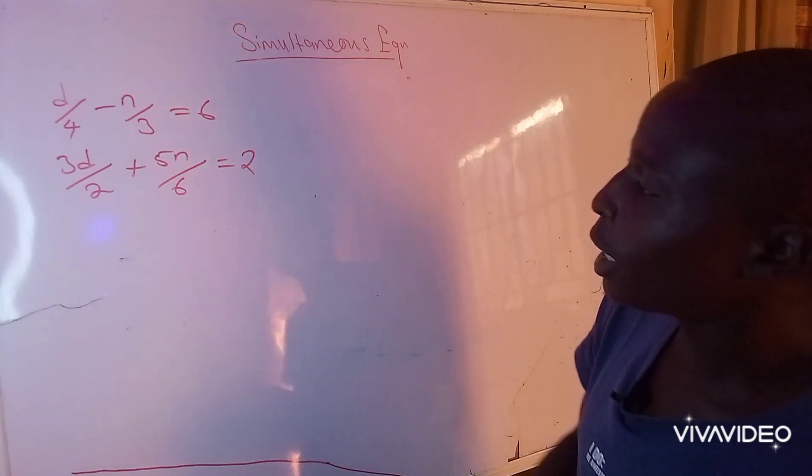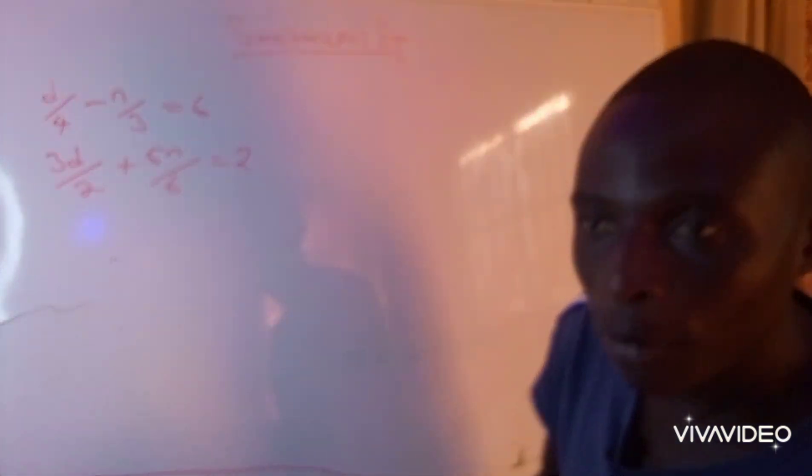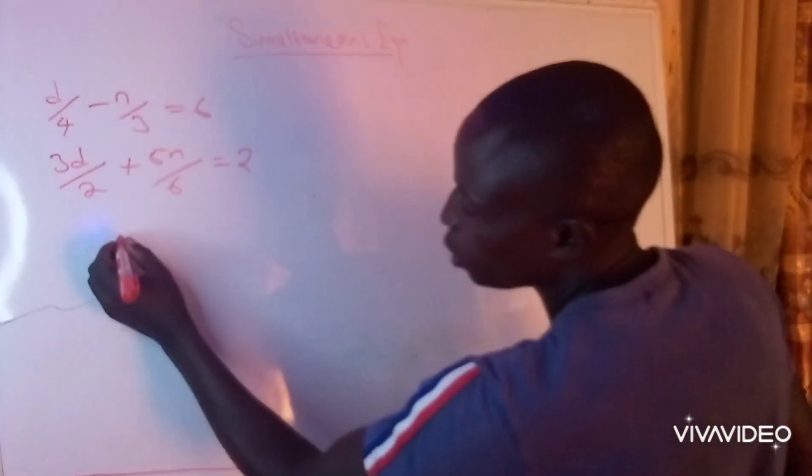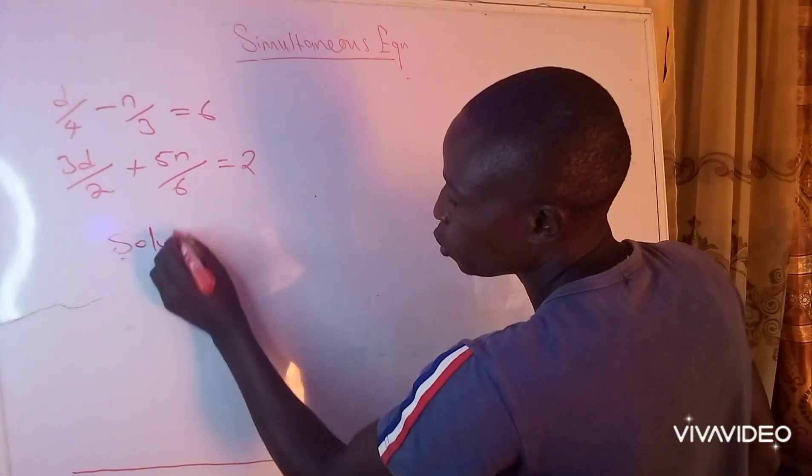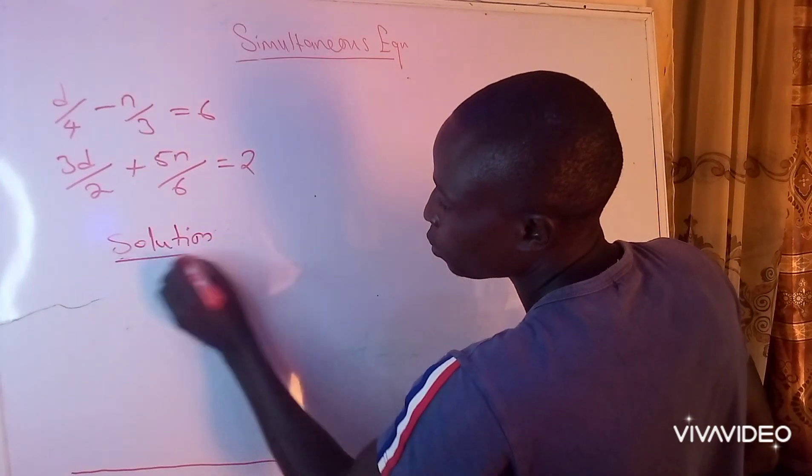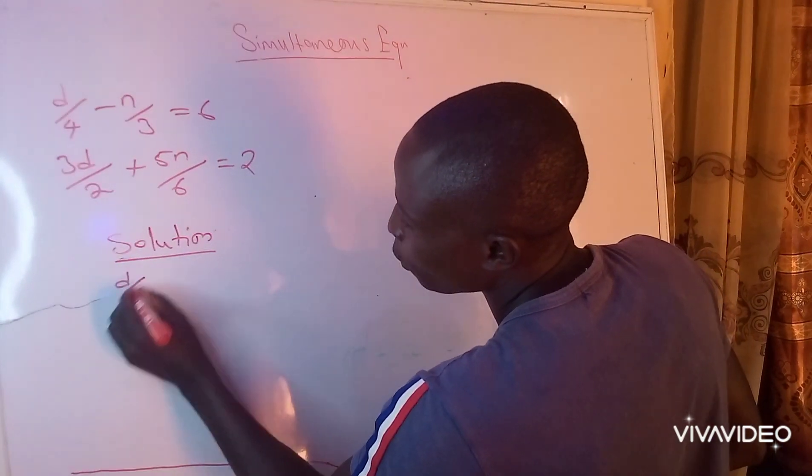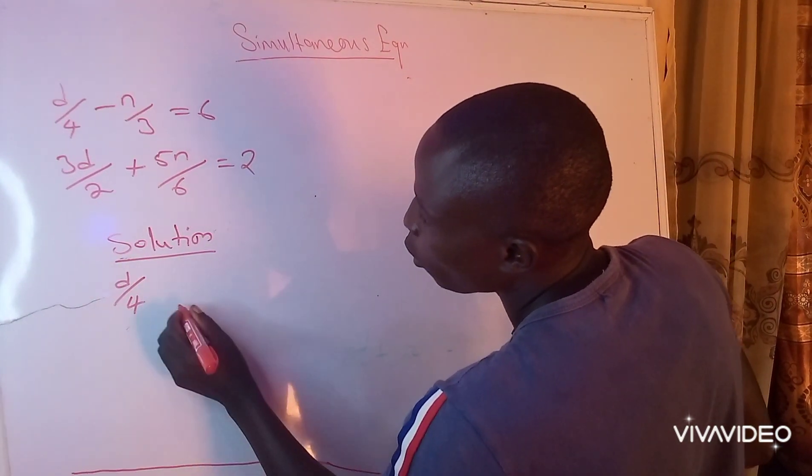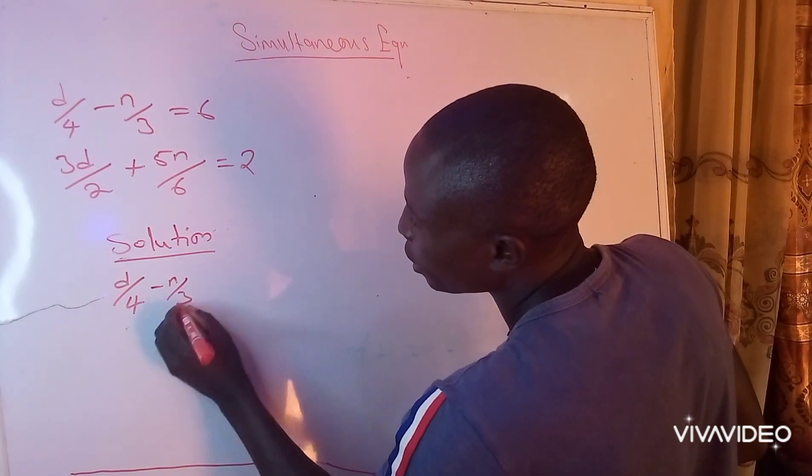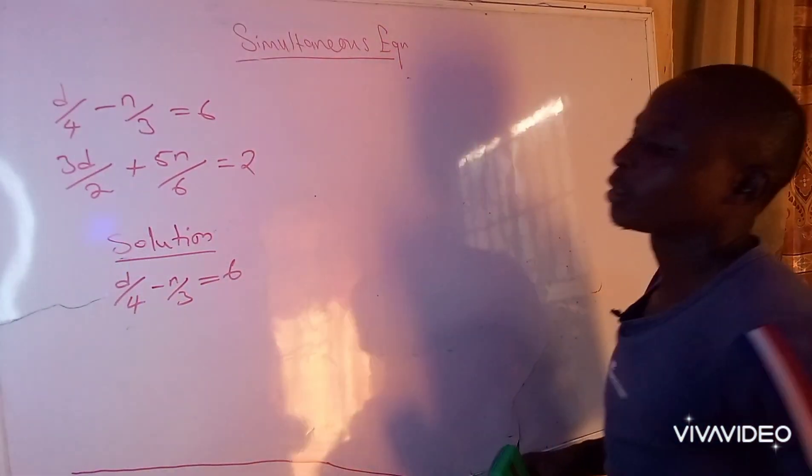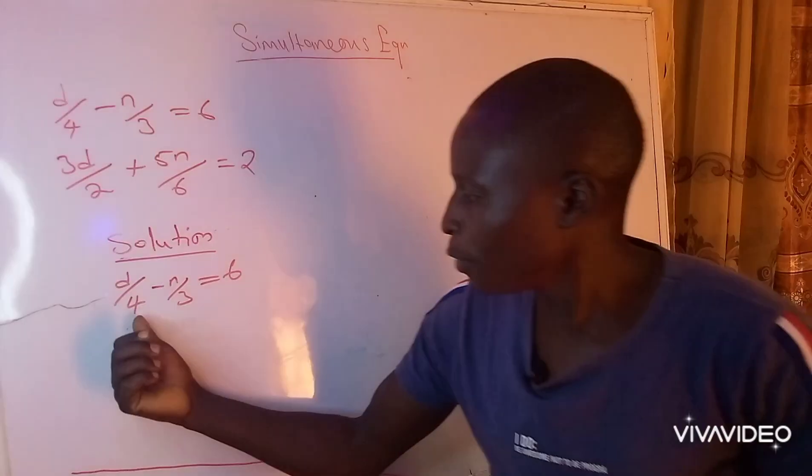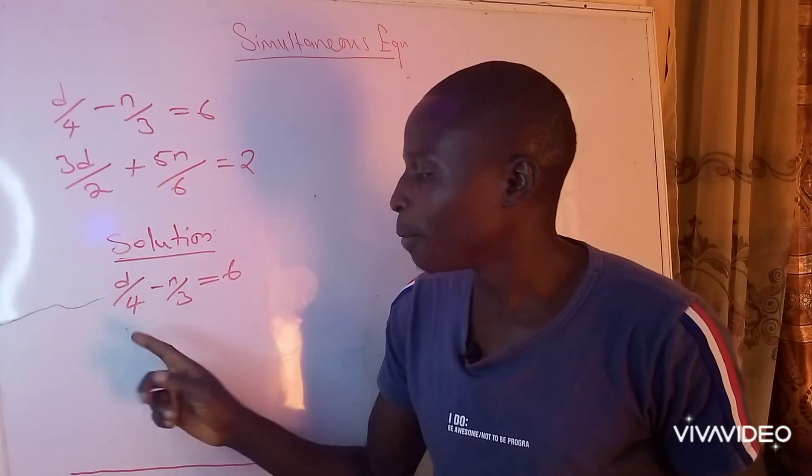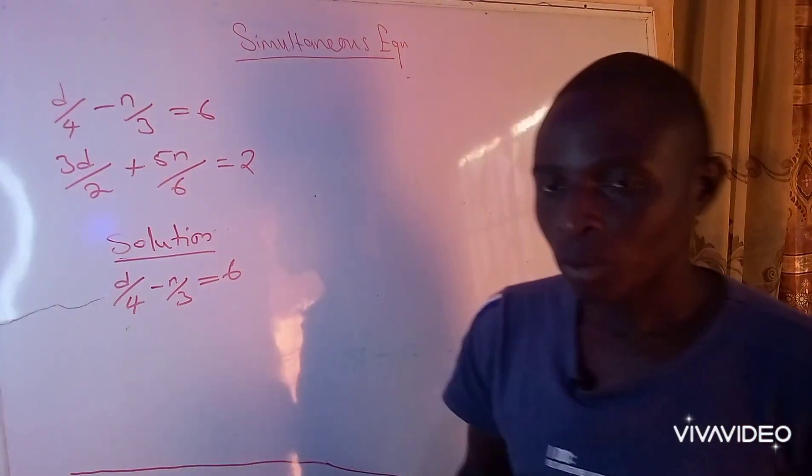So let's see what we're going to do. Solution: the first equation is d over 4 minus n over 3 equals 6. Then we have to look for the LCM of 4 and 3, and of course the LCM of 4 and 3 is 12.